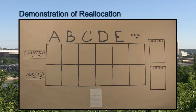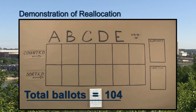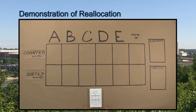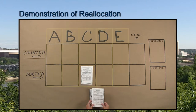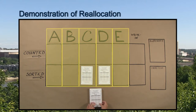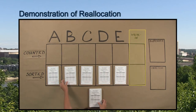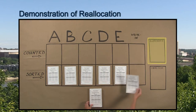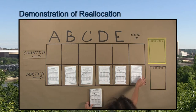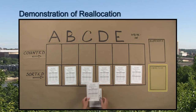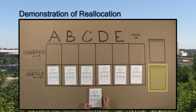In this demonstration, there are 104 total ballots. Ballots are first sorted by their first-choice selections. There is a separate pile for each candidate, a pile for write-in votes, a pile for suspended ballots, and a pile for inactive ballots.